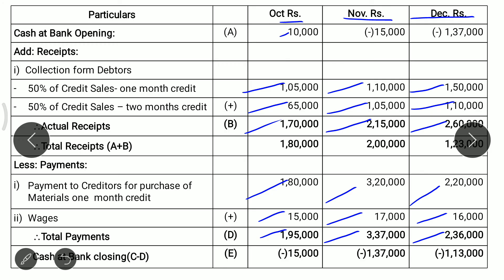For October: opening cash balance Rs. 10,000 plus total receipts Rs. 1,70,000 gives Rs. 1,80,000. Subtracting total payments of Rs. 1,95,000 gives a negative closing balance of Rs. 15,000 for the month of October.